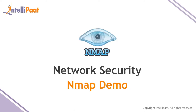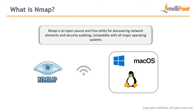Now we'll implement the NMAP demo. NMAP is a free, open-source utility for discovering network elements and security auditing, compatible with all major operating systems including Windows, Mac OS, and Linux. You can use NMAP to understand your network topology, see how many devices are connected, and identify any strange devices. Ethical hackers can also use it to discover hosts on a target network.